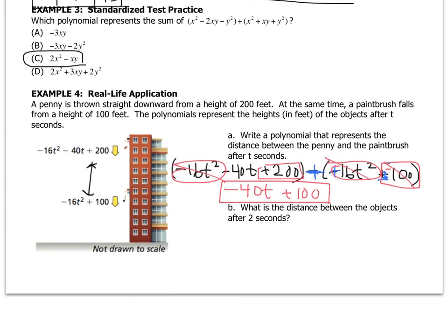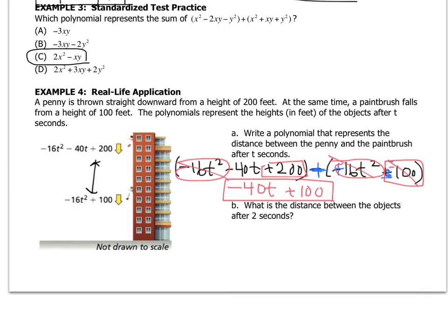Then we need to go to example B. They're asking you the distance at a particular time. Well, I have an expression that represents the distance at any given moment in time. So, I can plug in 2 into the t value and I can get the value of the distance in real life after 2 seconds. So, that would be negative 80 plus 100. So, I'm talking 20 and if you go back to the question it is 20 feet.